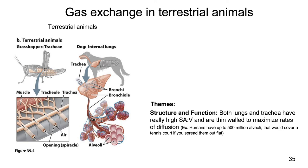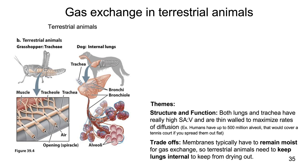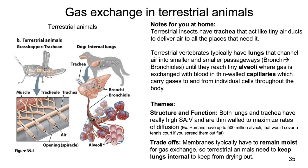For example, humans have up to 500 million alveoli in their lungs. If you were to lay those all flat, they would cover an entire tennis court — that is an enormous surface area fitting inside your body. Another important theme is trade-offs: membranes have to remain moist for gas exchange, so terrestrial animals need to keep their lungs internal to keep them from drying out. Both lungs and trachea have to be kept inside the body because otherwise, with such a high surface area to volume ratio, they would dry out.